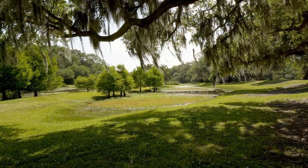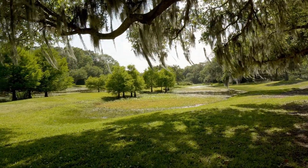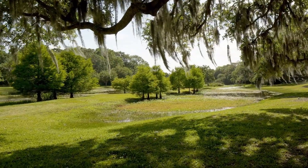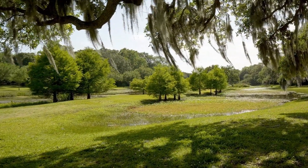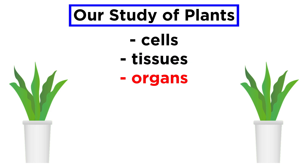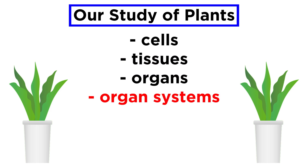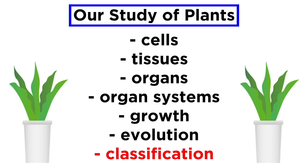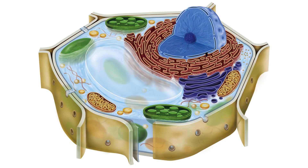So far in this botany series, we have gained a reasonable understanding of the world of plants. To achieve this, we examined plant cells, tissues, organs, organ systems, mechanisms of growth, evolution, plant classification, and much more. In doing so, we have built upon our pre-existing knowledge of biomolecules and cellular processes in a way that is specific to the plant kingdom.